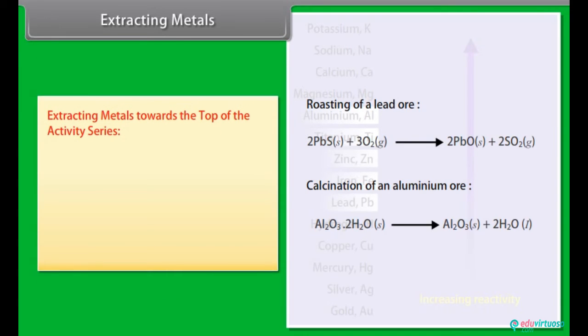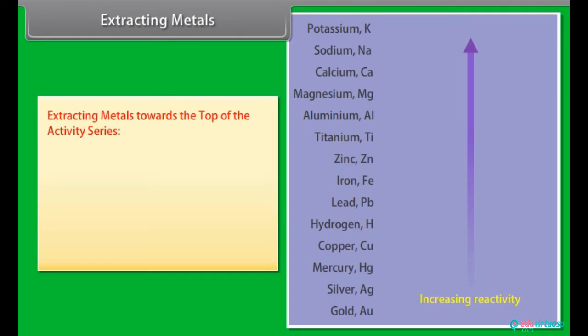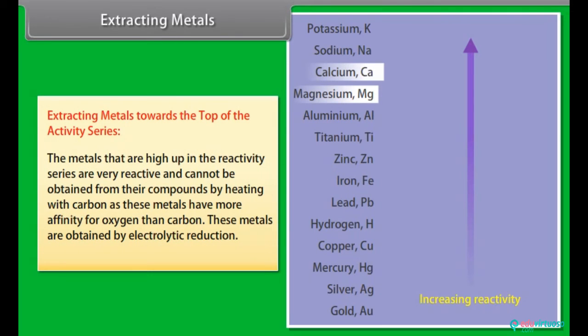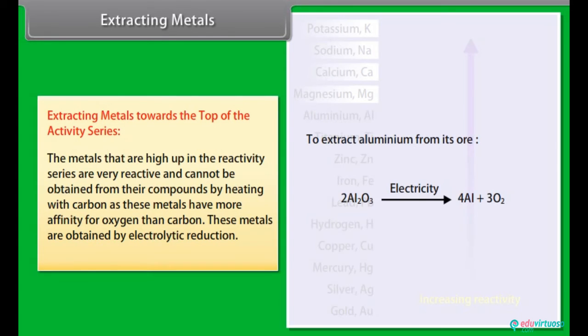Extracting metals towards the top of the activity series. The metals that are high up in the reactivity series are very reactive and cannot be obtained from their compounds by heating with carbon as these metals have more affinity for oxygen than carbon. These metals are obtained by electrolytic reduction.